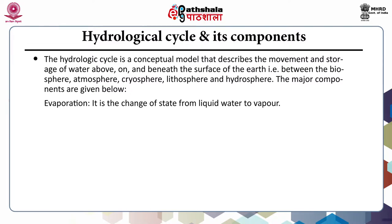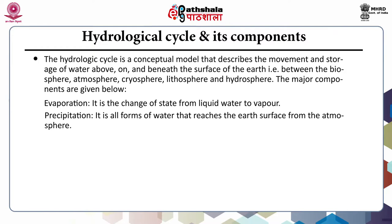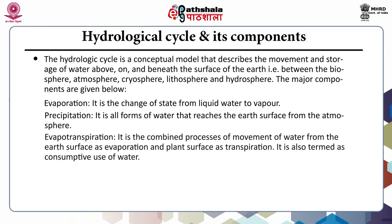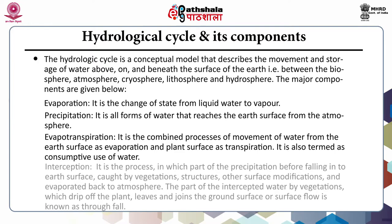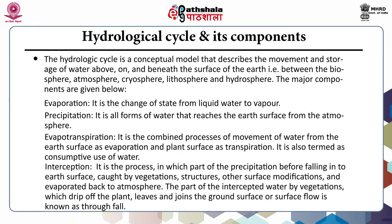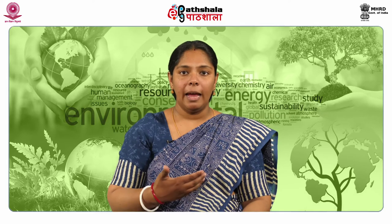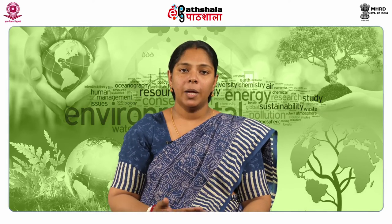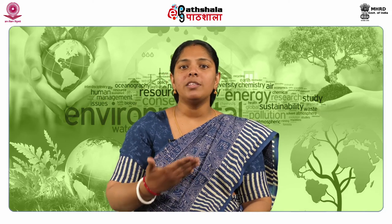Evaporation is the change of state from liquid water to vapor. Precipitation is all forms of water that reaches the earth's surface from the atmosphere. Evapotranspiration is the combined process of movement of water from the earth's surface as evaporation and plant surface as transpiration — it is also termed as consumptive use of water. Interception is the process in which part of the precipitation before falling to the earth's surface is caught by vegetation, structures or other surface modifications and evaporated back to the atmosphere. The part of the intercepted water by vegetation which drips off the plant leaves and joins the ground surface or surface flow is known as throughfall. Infiltration is the process in which water enters into the ground surface. Percolation is the deep downward movement of water after saturation of soil.